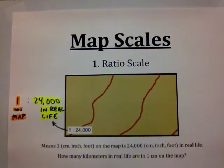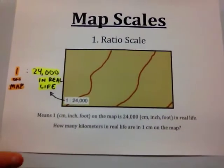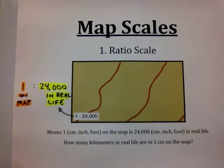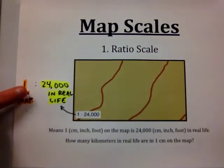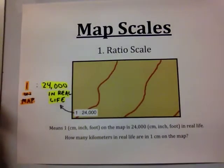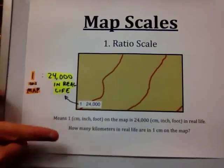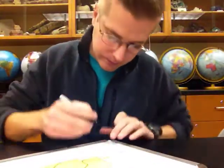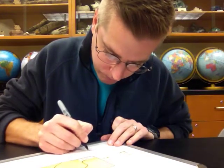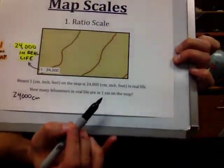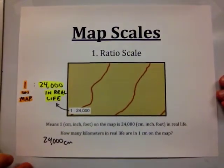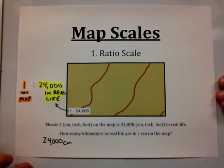A common question you will see associated with ratio scales is something like: how many kilometers in real life is 1 centimeter on the map? We already know 1 centimeter on the map is 24,000 centimeters in real life, so that's the number we're going to start with. We're going to set up a visual way of canceling out units as we convert, called stoichiometry.